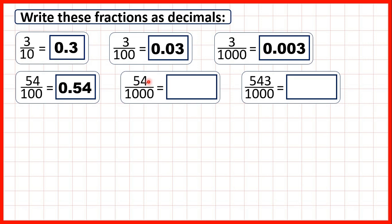Now we have 54 thousandths. The denominator of a thousand tells us that we can only have three digits after the decimal point. So that's 0.054. Because we can't go past the thousandths column, the five gets pushed over into the hundredths, but we need zero in our tenths and zero in our ones.